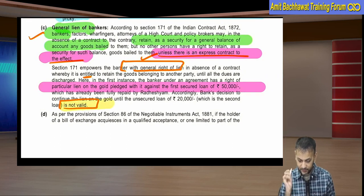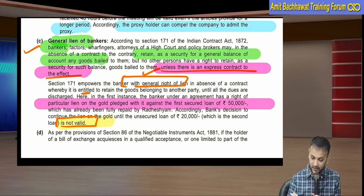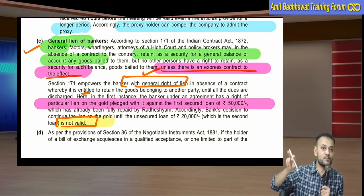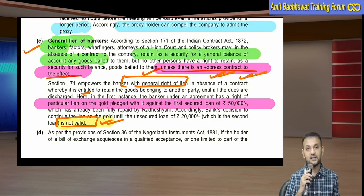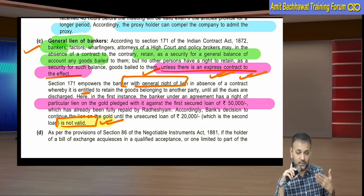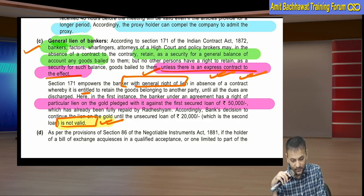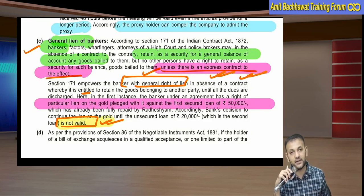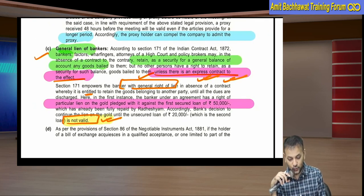The theory also states: bankers and factors have a general lien, unless there is an express contract to the effect. Please practice this. New types of questions are being asked that are not directly given in your institute material, but you must apply these concepts. If they are repeated questions, you should have practiced them in advance.